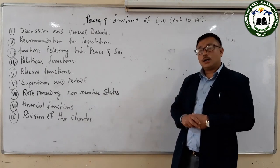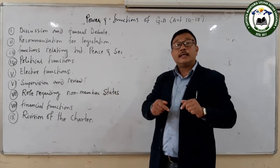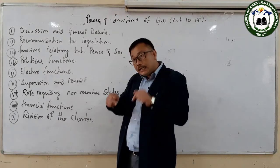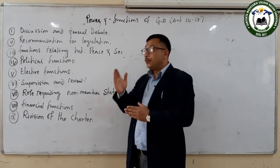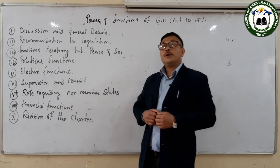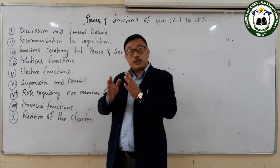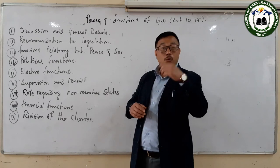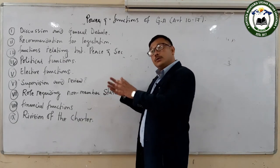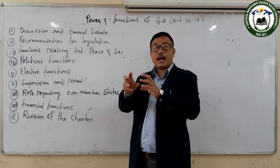The Subsidiary Organs are those organs which are formed by the agencies of the United Nations Organization, not directly by the UN itself. For example, Nuclear Energy Commission is formed by the General Assembly, while International Labour Organization, World Health Organization, and Human Rights Commission are formed by the Economic and Social Council. The Principal Organs are those without which the United Nations Organization is unable to work.